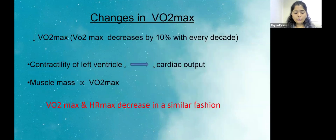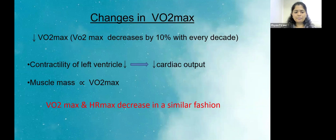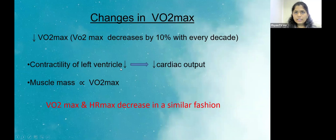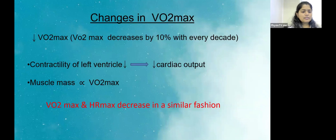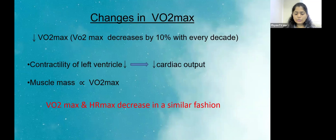Changes in VO2 max: VO2 max is the maximum oxygen uptake. Research has found it decreases 10% with every decade. Contractility of the left ventricle reduces because of reduced number of myocardial cells, which leads to reduced cardiac output and less blood coming out of the heart. Muscle mass is directly proportional to VO2 max — this is why men have higher VO2 max values than women. In sarcopenia, there is involuntary loss of muscles, so as lean muscle mass decreases, VO2 max reduces as well.